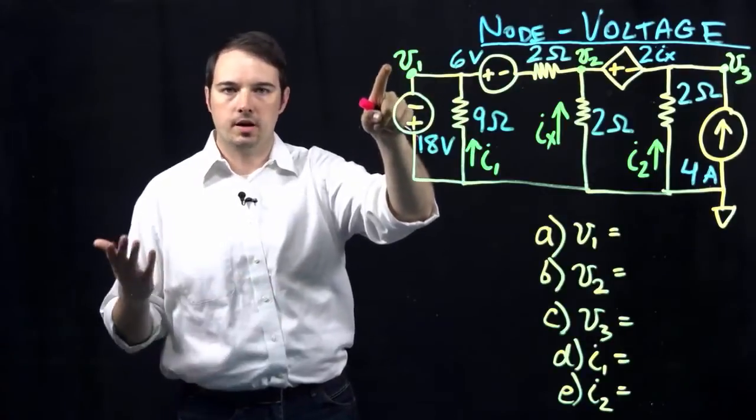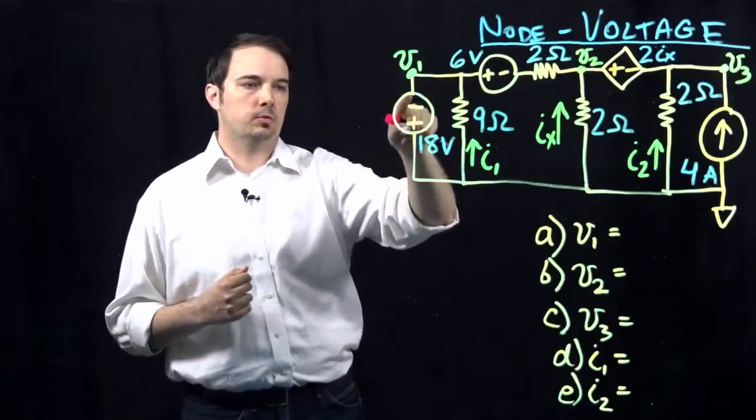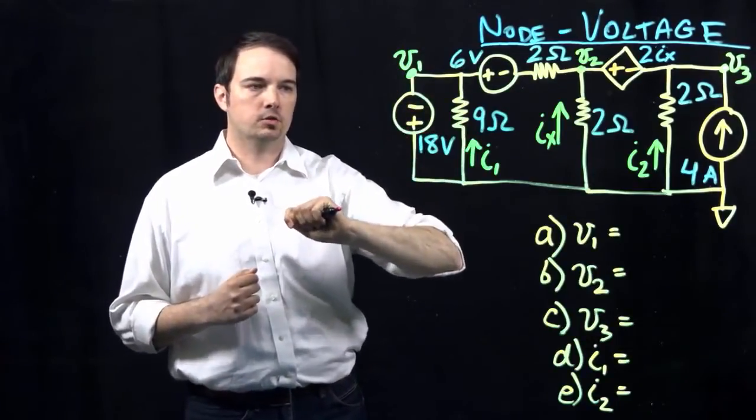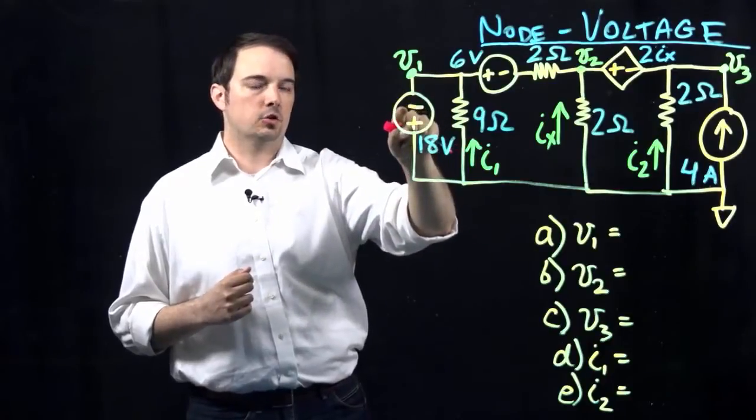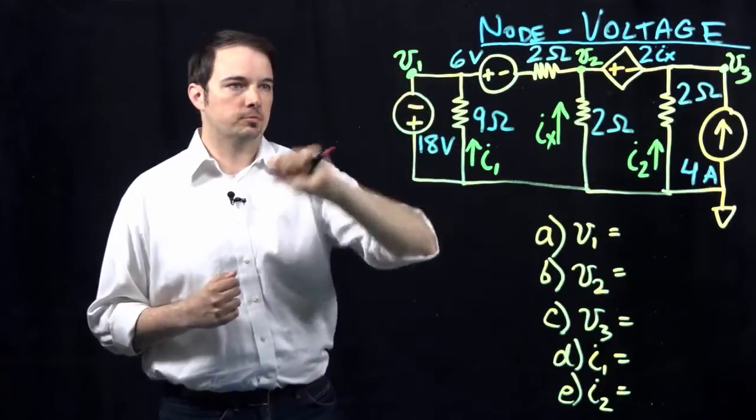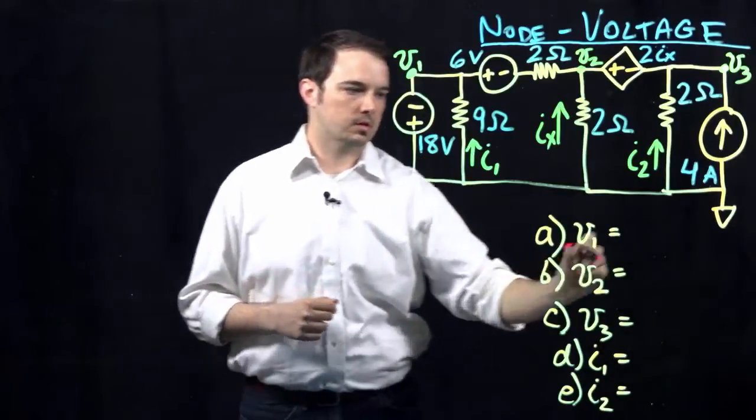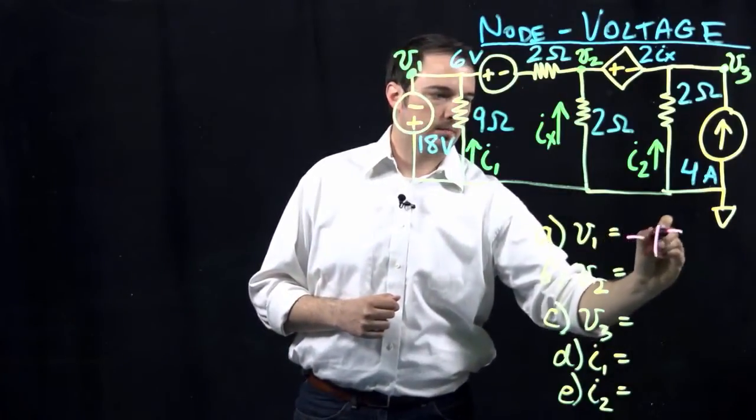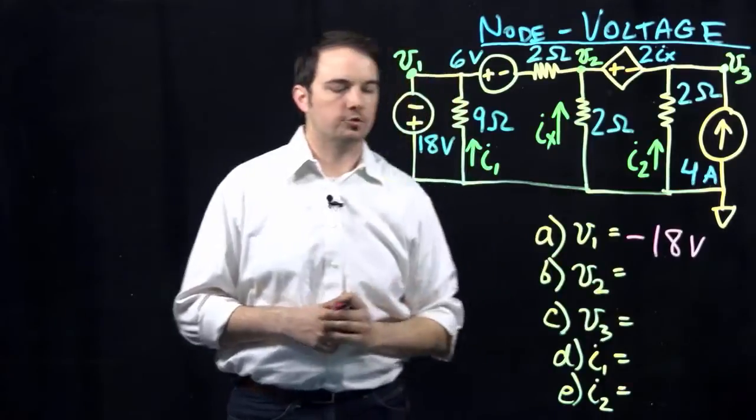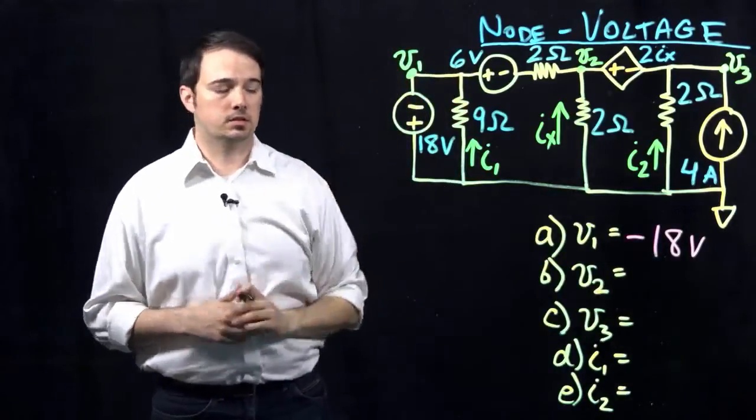And then it's just a matter of asking yourself, should that be a positive or a negative voltage? And in this case, we look at the polarity of that independent source, and we see that because the negative terminal of that source is tied to my node voltage, that should be a negative 18 volts in this case. So that we can just immediately copy down as the solution to part A, simply because it's tied to that source.